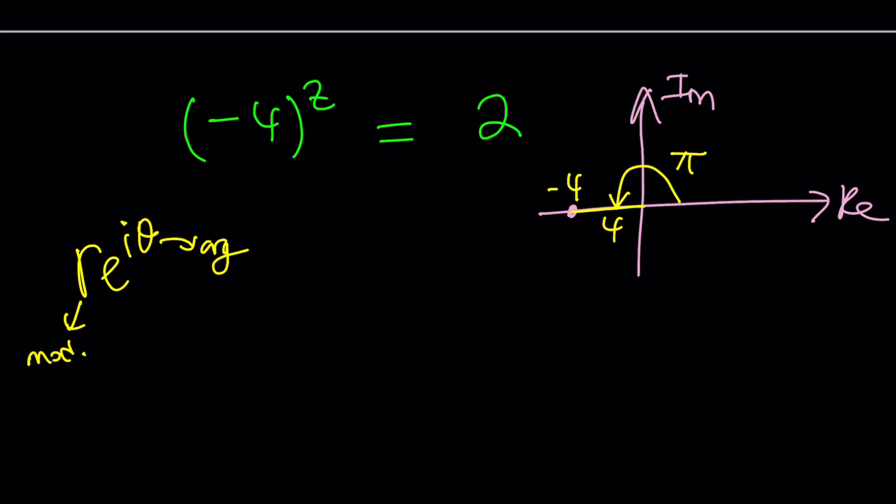And you can write any complex number as r e to the i theta, r is the modulus, and theta is the argument. So here's what we can do for negative 4 then. It's 4 times e to the power i times the argument, which is pi.